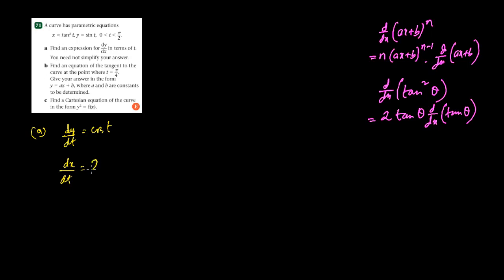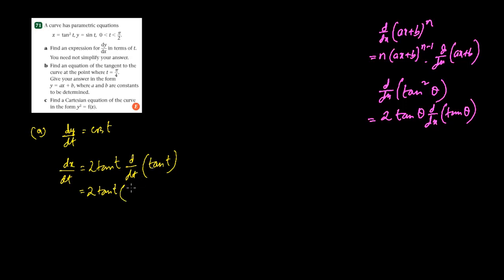So we write 2 first, then we write tan t, and then we write d by dt of whatever is inside the power, which is tan t. The derivative of tan t is sec² t, and the chain rule of this angle is 1, so I'm not writing it. So this would be 2 tan t sec² t.